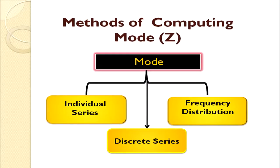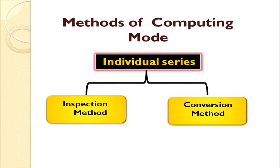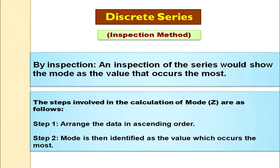Mode can be calculated in three different series: individual series, discrete series, and frequency distribution series. For individual series, mode can be computed by the inspection method or the conversion method. In the inspection method, we arrange the data in ascending order, then identify the value which is repeated the most — that value is the mode.